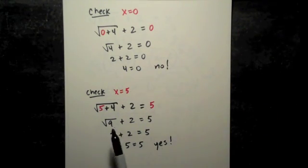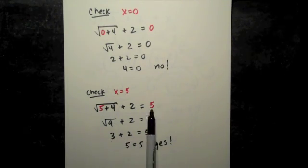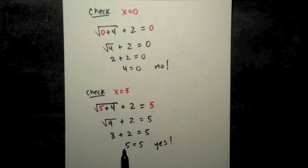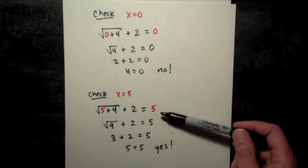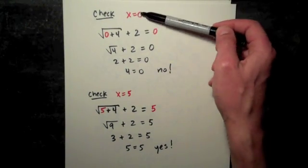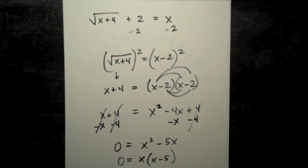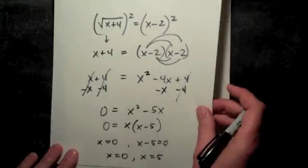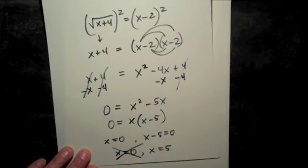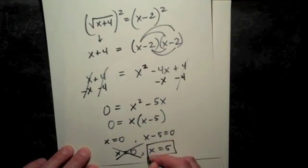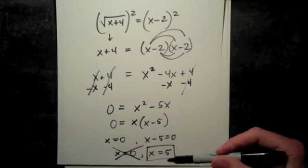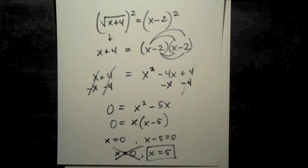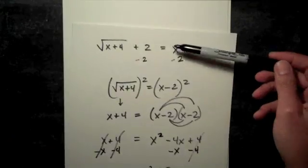X equals 5 on the other hand. 5 plus 4, square root of 9. 3 plus 2 on the left. 5 on the right. 5 equals 5. That's true. So 5 is a solution. 5 is a solution, 0 is not a solution. So I would cross out the 0 and only list 5 as the solution to the equation that we started with.